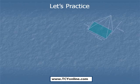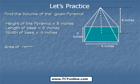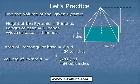Now let's see this question. We need to find the volume of this given pyramid, whose length is equal to 6 inches, width is equal to 4 inches, and the height is equal to 8 inches. The area of the rectangular base is simply 6 × 4 = 24 square inches. Volume of a pyramid is 1/3 × l × b × h. Plugging in l × b = 24 and h = 8, we get the volume of the pyramid as 64 cubic inches.